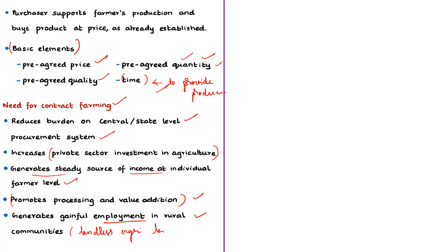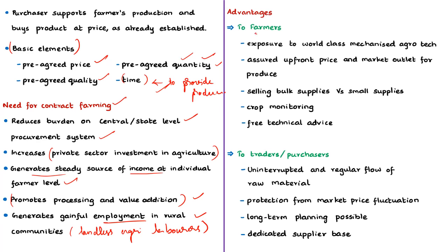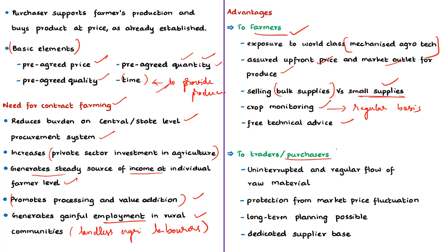It also helps generate gainful employment in rural communities, particularly for landless agricultural labourers. With respect to the farmer, this type of farming gives exposure to modern mechanized agro-technology. The farmer obtains an assured upfront price and assured market outlet for crops. The farmer can sell bulk supplies compared to small supplies required by the fresh market, and also gets regular crop monitoring and free technical advice.